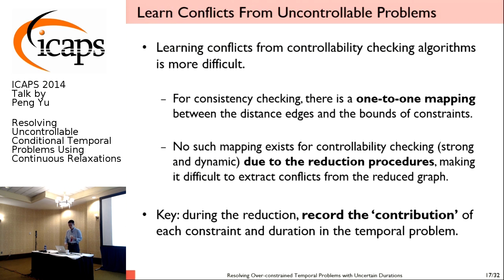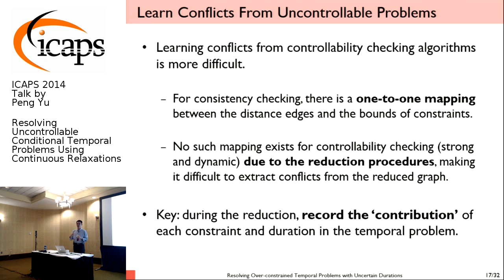Why is it hard? Learning conflicts from a controllability-checking algorithm is hard because we lose the one-to-one mapping between edges in the negative loop and constraints in the original problem. Checking strong or dynamic controllability requires a series of reductions to map the STNU to an STN, and during reduction, many new distance edges are added that are not directly supported by any constraint in the original problem. The key concept to address this is simple: during reduction, we remember which original constraints contributed to each newly added edge.